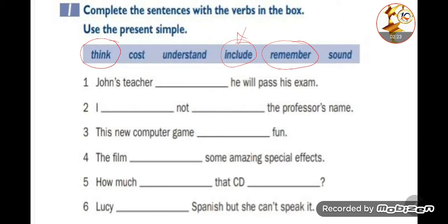What is required is to use these verbs as present simple. Think means 'to think' or 'to believe,' cost means 'to cost,' understand means 'to understand,' include means 'to include,' remember means 'to remember,' and sound as a verb means 'to seem/to sound.' Number one: John's teacher thinks he will pass his exam. Here 'thinks' came with the meaning of 'believes.'